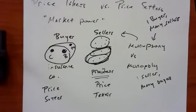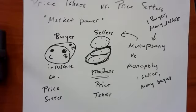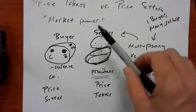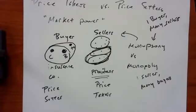We're going to wrap up chapter seven today. We were talking last time about price takers versus price setters. The key difference is what we refer to as market power, which is the ability of an organization or an individual to set a price in the marketplace.